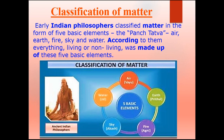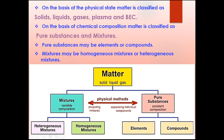This was the ancient Indian understanding about matter. But modern science classifies matter according to its physical states. Matter basically exists in three classical physical states: solid, liquid, and gas. There are two more states of matter — plasma and Bose-Einstein condensate — but they are rarely seen.